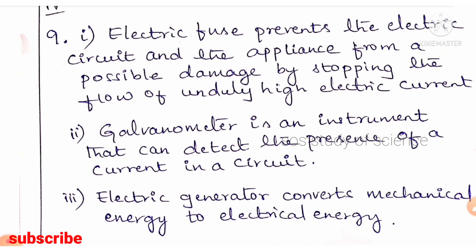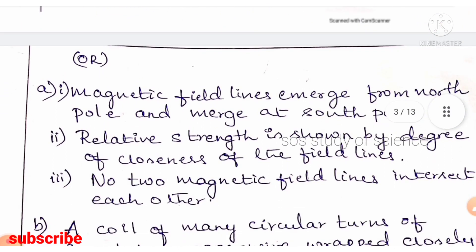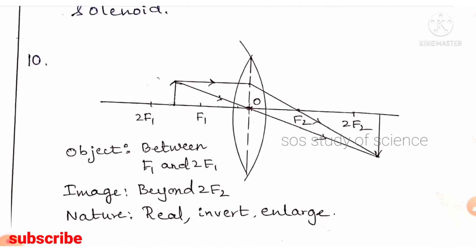Alternatively, list the properties of magnetic field lines. First: magnetic field lines emerge from the north pole and merge at the south pole. Second: relative strength is shown by the degree of closeness of field lines. Third: no two magnetic field lines intersect each other. Also, the definition of solenoid: a coil of many circular turns of insulated copper wire wrapped closely in the shape of a cylinder is called a solenoid.